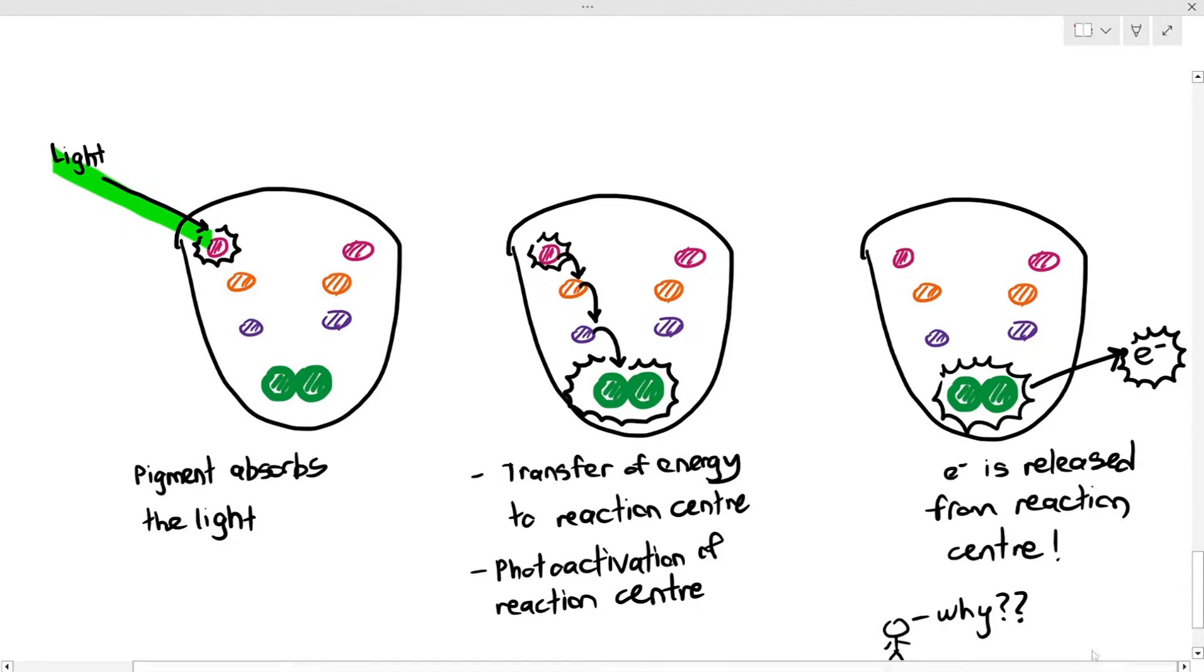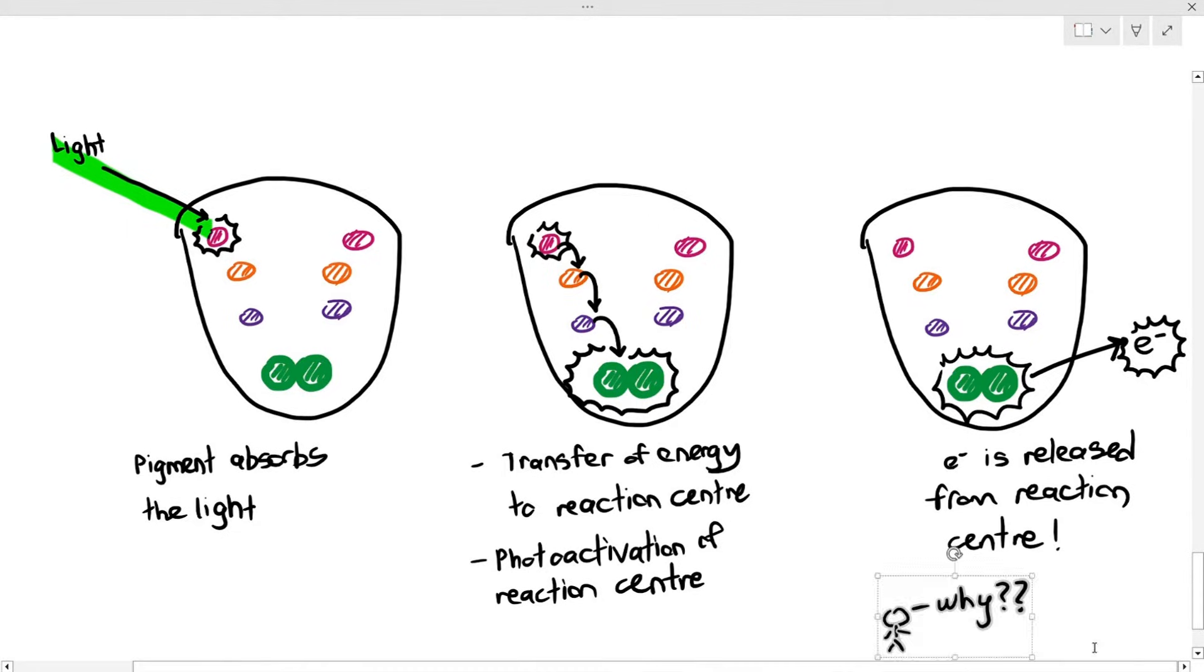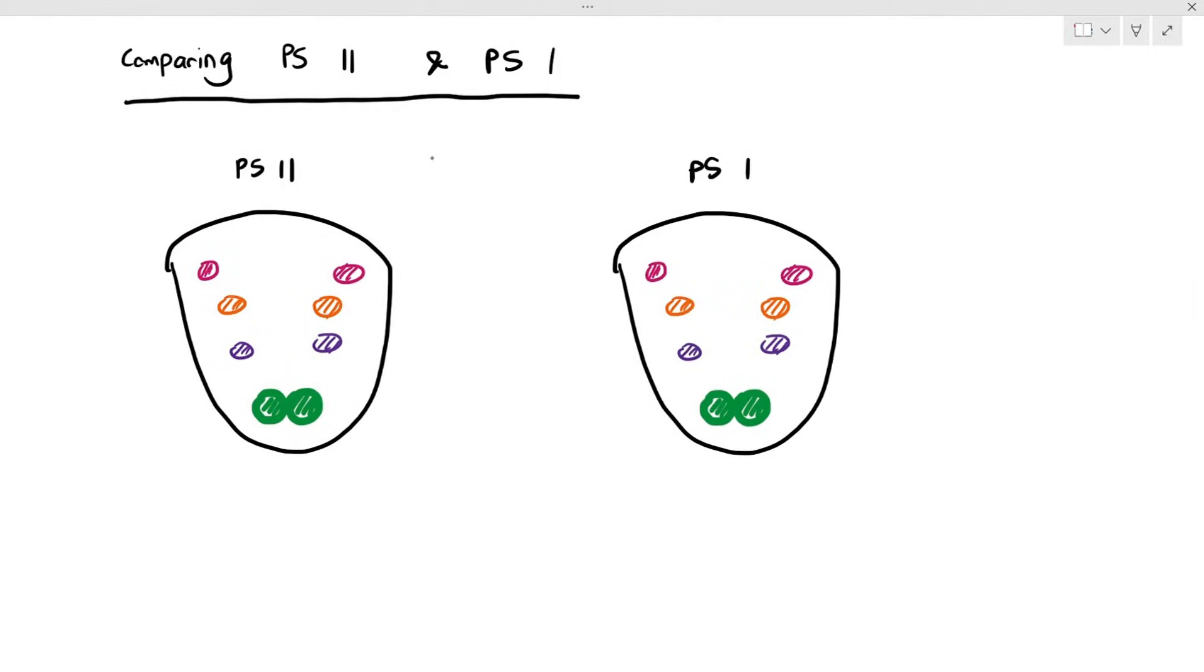When you're comparing photosystem 2, remember there are two types of photosystem—photosystem 2 and photosystem 1. The good news is both of them have almost the same type of pigments. They function the same way, where they absorb the light, transfer the energy to the reaction center, and the reaction center releases out an electron.